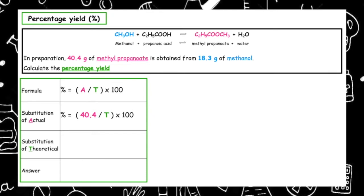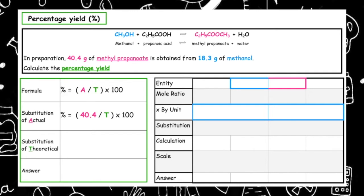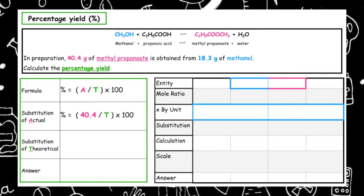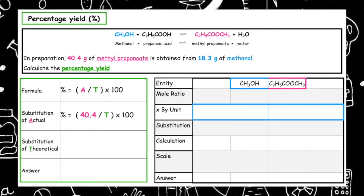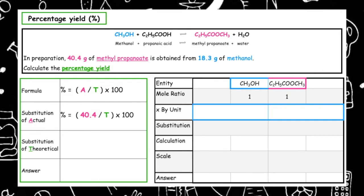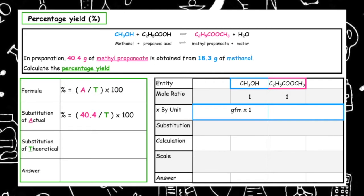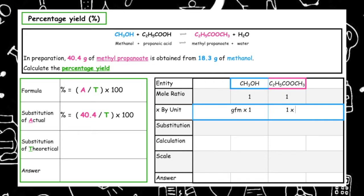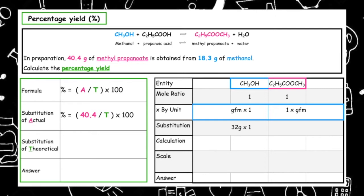The theoretical is calculated by taking the entities we're given information about in the question and scaling for the quantity of our reactant. The entities we've been given are methanol, which has the formula CH₃OH, and methylpropanoate. From the balanced equation, we have a one-to-one ratio. The unit is mass, so we do GFM times 1 and 1 times GFM. The GFM of methanol is 32 and the GFM of methylpropanoate is 88.